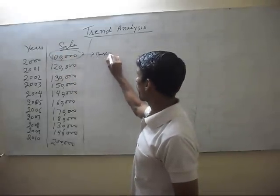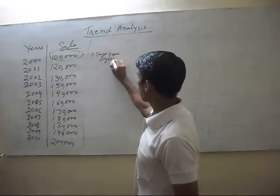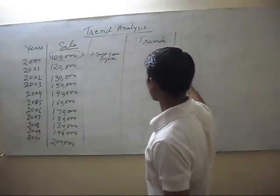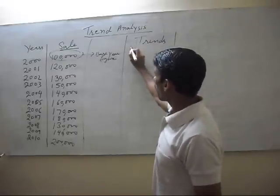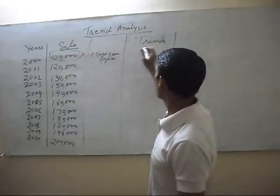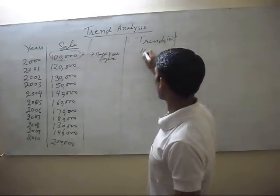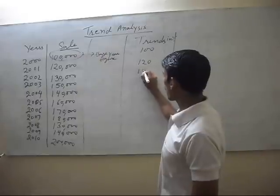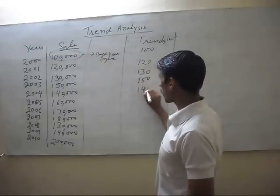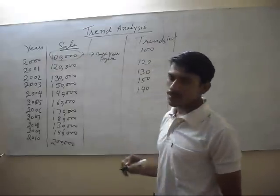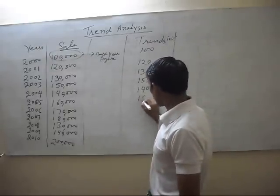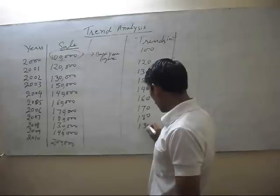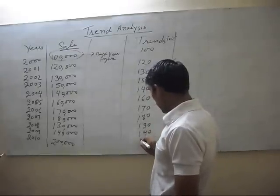Now we write the trend values. Trend means: divide each year's figure by the base year figure and multiply by 100 to get percentage form. So the base year trend is 100. One lakh twenty thousand divided by one lakh into 100 gives 120. The subsequent trend values are 130, 150, 140, 160, 170, 180, 130, 140, and 200.